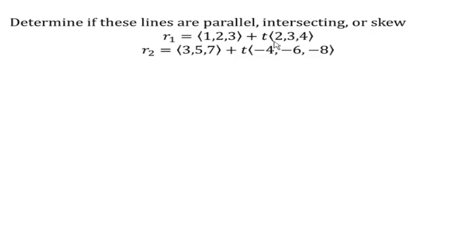So looking at these two lines, we can start by looking at the direction vectors. The first line has a direction vector of 2, 3, 4, whereas the second line has a direction vector of negative 4, negative 6, negative 8.